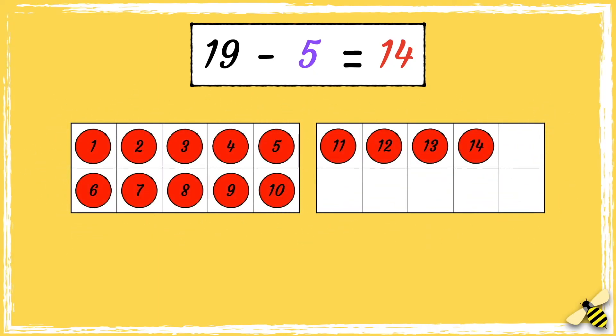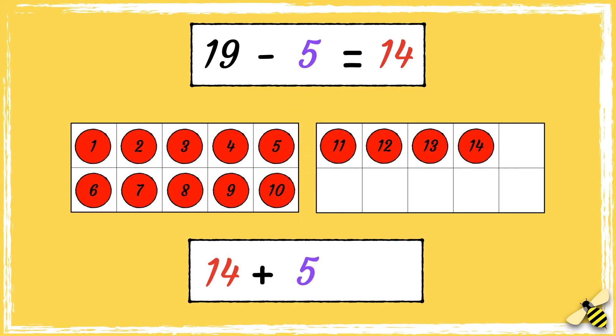Here's the number sentence: 19 take away 5 equals 14. What is the inverse operation? Can you check this calculation by using a tens frame? Pause the video to give you time to work out the answer. Press play when you're done. Let's see how you got on. So we need to do the inverse operation. So we start from 14 and add 5, which equals 19. So the calculation is correct.